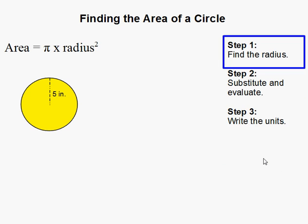How to find the area of a circle. First thing we need to do is find the radius. In this problem we're given that the radius is 5 inches with this dashed line and the 5 inches right there.